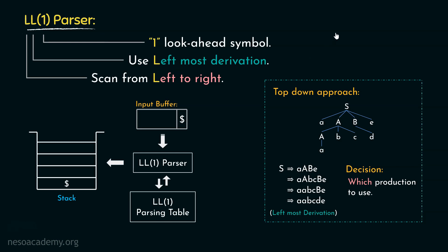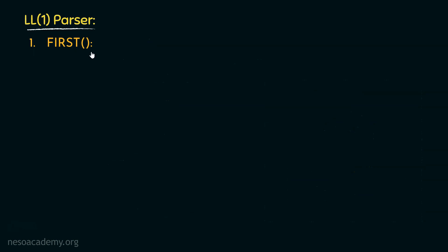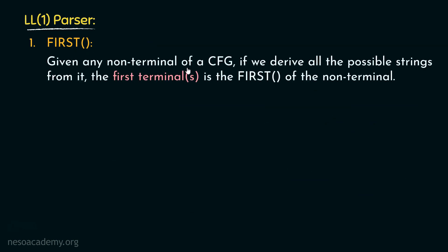Before we learn about the LL1 parsing method, we need to learn how to construct this LL1 parsing table. In order to construct the LL1 parsing table, we need to learn about two different concepts. Coming to the first one, that is the first function. Now what is first? Given any non-terminal of a CFG, that is a context-free grammar, if we derive all the possible strings from it, the first terminal or terminals is the first of the non-terminal. Let me explain with an example.